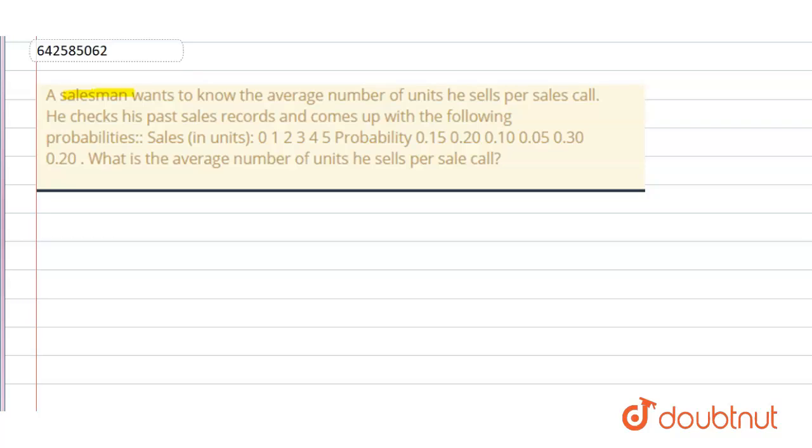Today's question: we have a salesman who wants to know the average number of units he sells per sales call. He checks his past sales records and comes up with the following. Sales in units: 0, 1, 2, 3, 4, 5, and probability: 0.15, 0.20, 0.10, 0.05, 0.30, 0.20. Now we have to calculate what is the average number of units he sells per call.